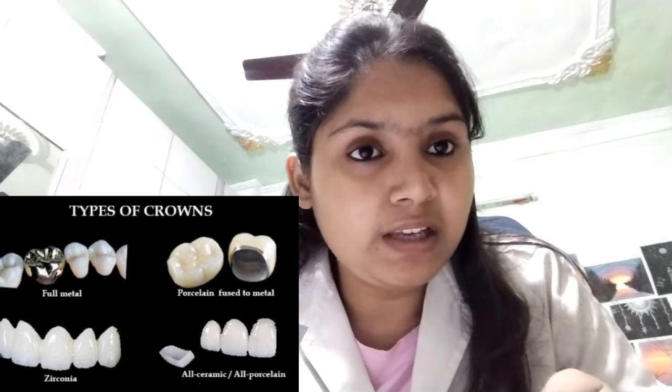The third type is full ceramic — the entire crown is made of ceramic with no metal at all. Within full ceramic, there are two subtypes: zirconia and Emax. Zirconia can be used for both anterior and posterior teeth because its strength is very good, making it suitable for back teeth. Emax is used for anterior teeth and provides the appearance of a natural tooth.